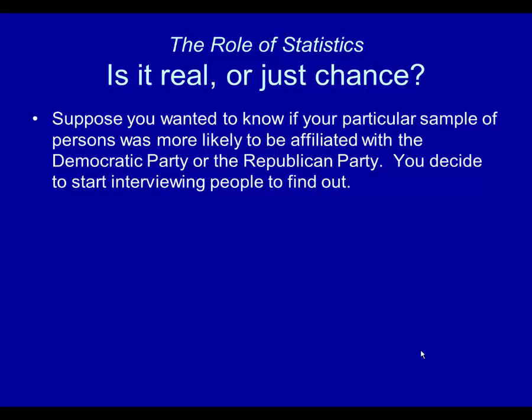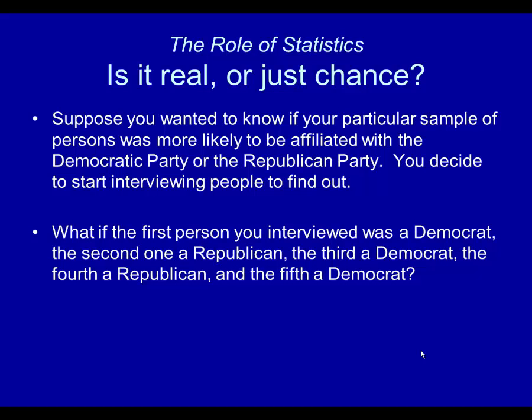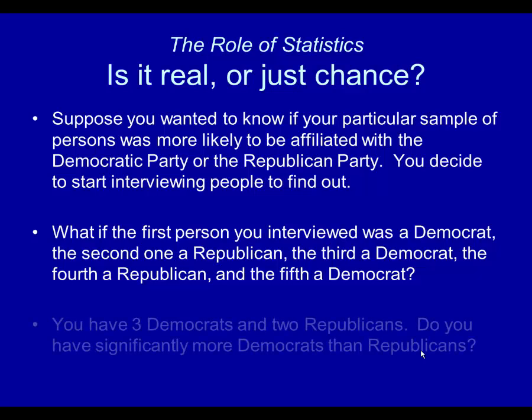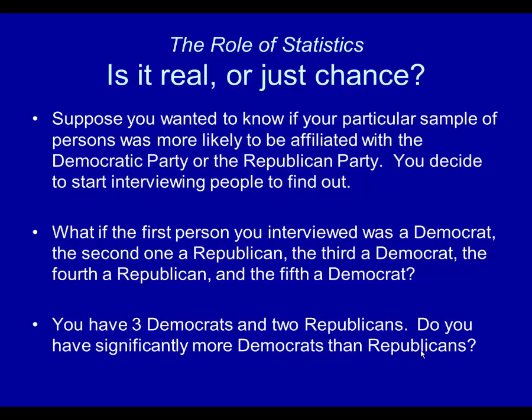Let's look at this particular situation. Suppose you wanted to know if your particular sample of persons was more likely to be affiliated with the Democratic Party or the Republican Party. You decide to start interviewing people to find out. What if the first person you interviewed was a Democrat, the second one a Republican, the third one a Democrat, the fourth one a Republican, and the fifth one a Democrat? You have three Democrats and two Republicans. Do you have significantly more Democrats than Republicans? Does it make sense to conclude that three-fifths of all persons in the population are affiliated with the Democratic Party?